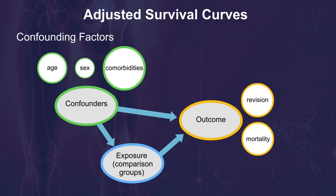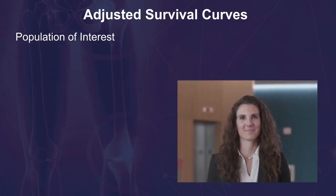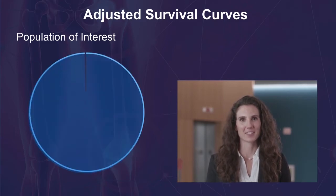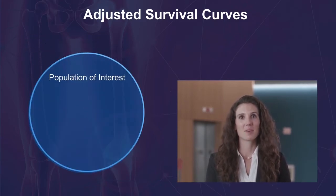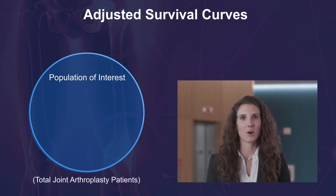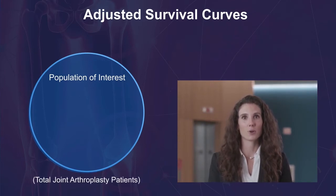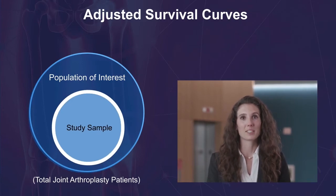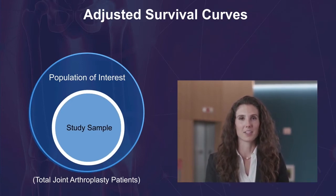Without appropriate adjustment for confounding factors, outcome rates cannot be fairly compared across groups. An important consideration when creating adjusted survival curves is the population of interest. In orthopedics research, the most common population of interest is all patients who have undergone total joint arthroplasty. This is commonly operationalized by using the entire study sample, provided that the study sample reasonably resembles this population of interest.